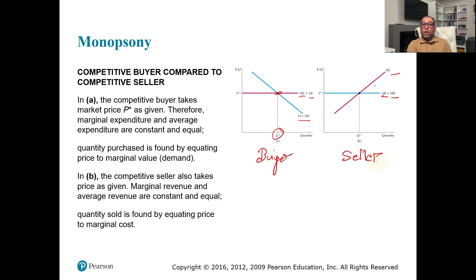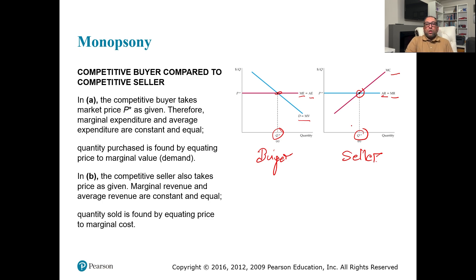A competitive seller equates marginal cost with average or marginal revenue to find quantity. So the marginal expenditure and average revenue are constant and equal, and quantity purchased is found by equating price to marginal value on the demand curve. A competitive seller also takes price as given — marginal revenue and average revenue are constant and equal — and quantity sold is found by equating price to marginal cost.